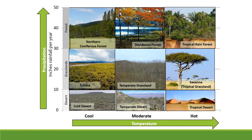Looking at that precipitation-temperature graph again: tropical rainforests and savannas are tropical grasslands; tropical deserts are places that are really hot and really dry. In the middle are temperate areas — deciduous forest, temperate grasslands, temperate deserts. On the cooler end are northern coniferous forests or the taiga, then the tundra. The grasslands of cool climates are the tundra, and the cold desert could be like the sagebrush steppe.